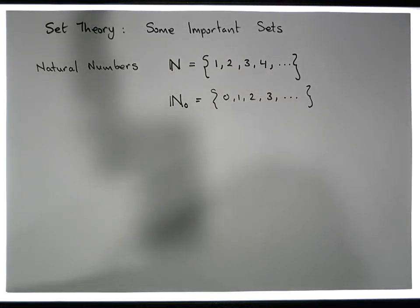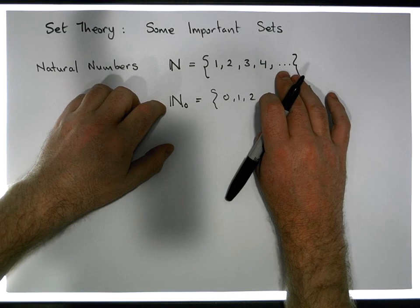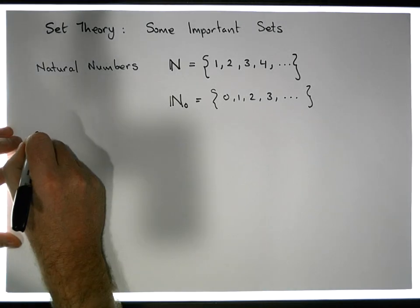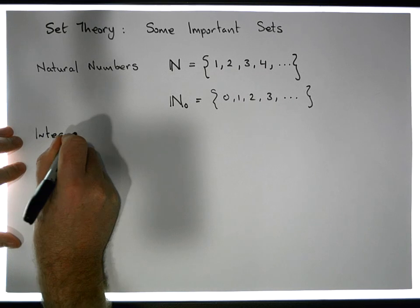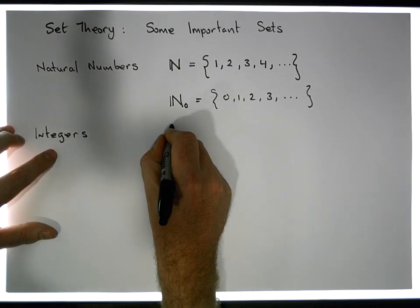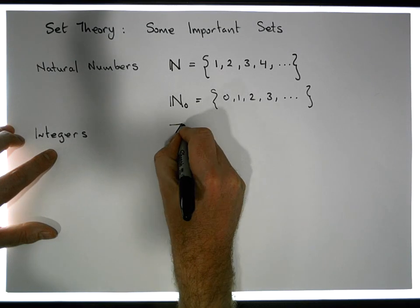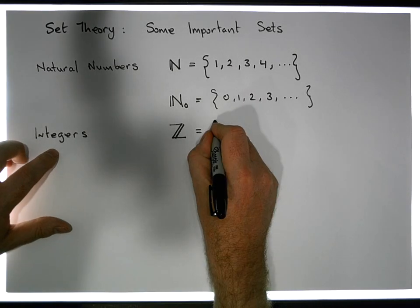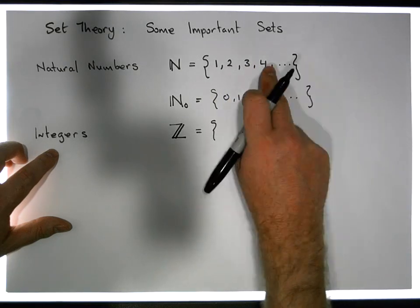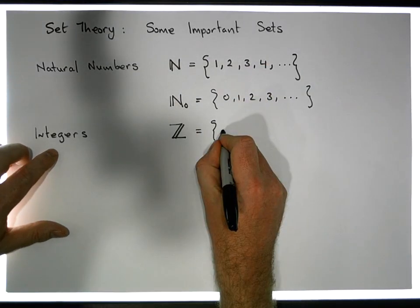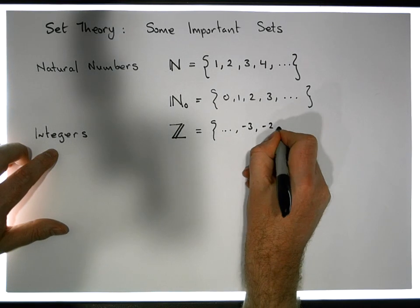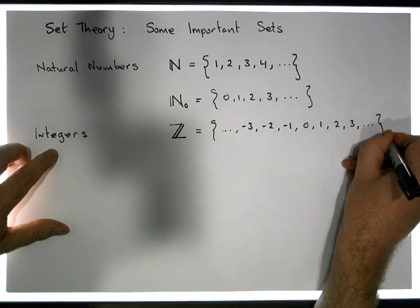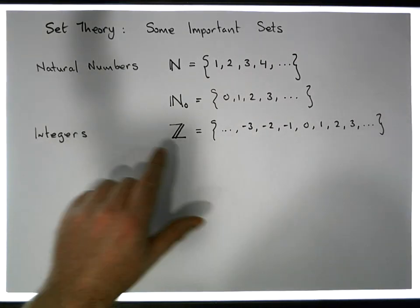The next set we can construct includes the natural numbers, all of their negative counterparts, and also zero. This particular set we call the integers. The integers are symbolized by a bold Z. Using roster notation, extending to both positive and negative infinity, the integers are: dot dot dot, minus three, minus two, minus one, zero, one, two, three, dot dot dot.